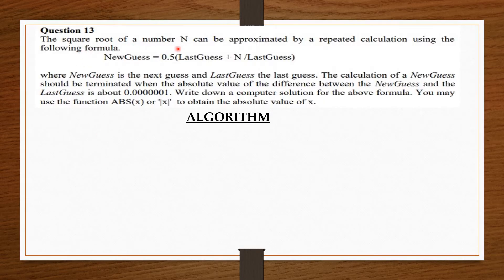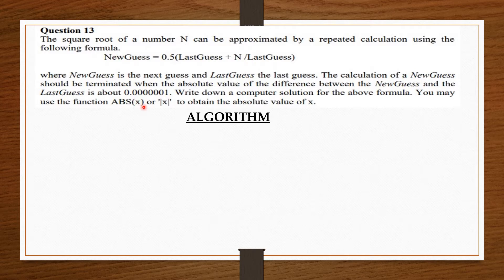The square root of a number n can be approximated by a repeated calculation using the following formula: new guess equals 0.5 times last guess plus n (the number) divided by last guess. Where new guess is the next guess and last guess is the last guess. The calculation should be terminated when the absolute value of the difference between the new guess and the last guess is about 1 in 10 million. You may use the function abs to obtain the absolute value.